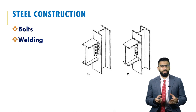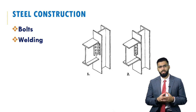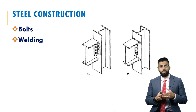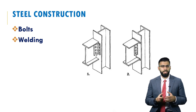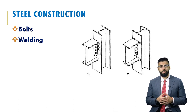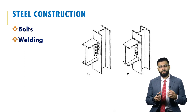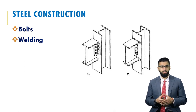The construction of a steel structure involves combining several members together. We can link these members in two ways: through the use of bolts and nuts, or through welding, which combines elements such as the column and beam together.